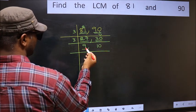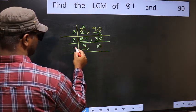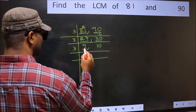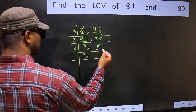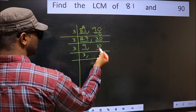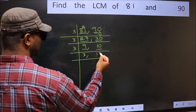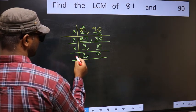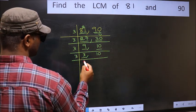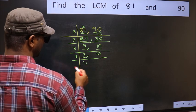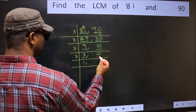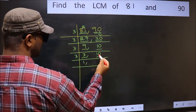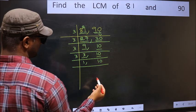Now we have 9 and 10. For 9: 3 times 3 is 9, so 9 divided by 3 is 3. The other number, 10, is not divisible by 3, so write it down as it is. Now we have 3 and 10. Since 3 is a prime number, 3 times 1 is 3. The number 10 is still not divisible by 3, so write it down as it is.